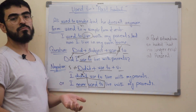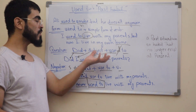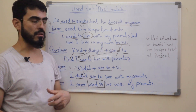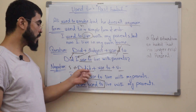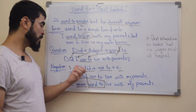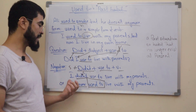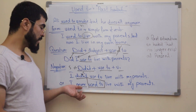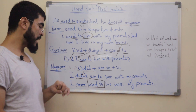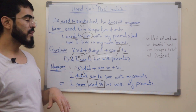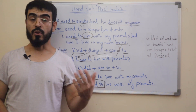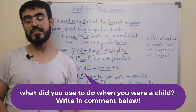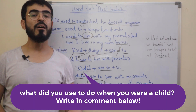For the question form, bring 'did' to the beginning of the sentence, then the subject, then 'use to' — not 'used to.' For the negative, use didn't plus 'use to,' with the subject first. For example: 'I didn't use to live with my parents.' Or you can use 'never': 'I never used to live with my parents.' Now tell me about your habit — what habit did you have in the past? Write in the comments below.